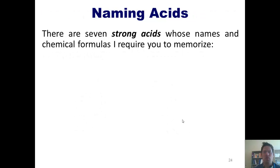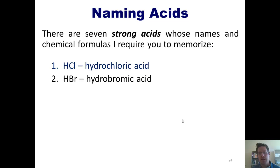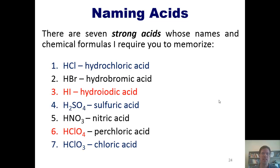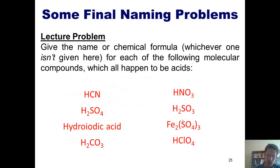We now arrive at our final topic for the day, and for this chapter, that of naming acids. This topic is pretty straightforward. As it turns out, there are seven strong acids whose names and chemical formulas I require you to memorize. They are HCl, which is hydrochloric acid; HBr, hydrobromic acid; HI, hydroiodic acid; H2SO4, sulfuric acid; HNO3, nitric acid; HClO4, perchloric acid; and HClO3, chloric acid.